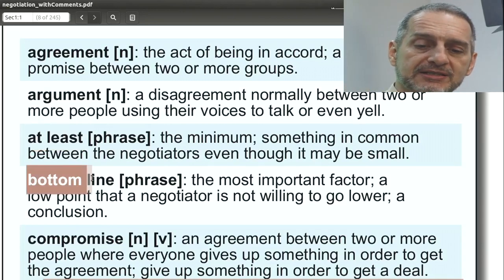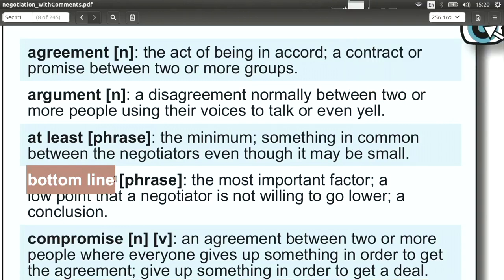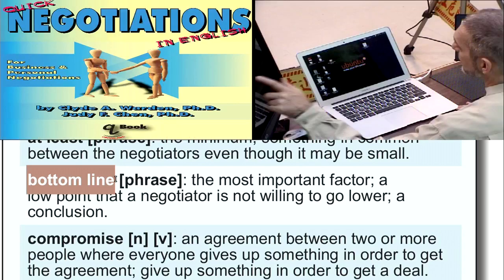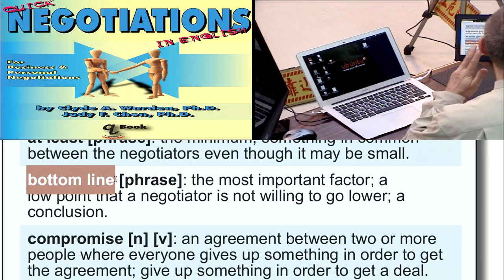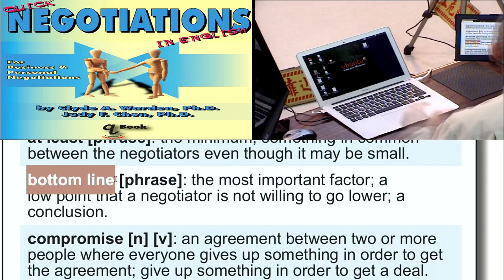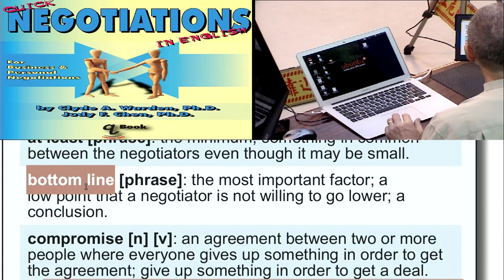Bottom line is related to the idea of at least. Bottom line means you cannot go below this point. Usually bottom line is used with an offer, and price is involved somehow. If you say my bottom line is $10, it means you cannot go below $10. It can also refer to the whole package — quality, quantity, and price altogether. Usually, though, it's used just with price.